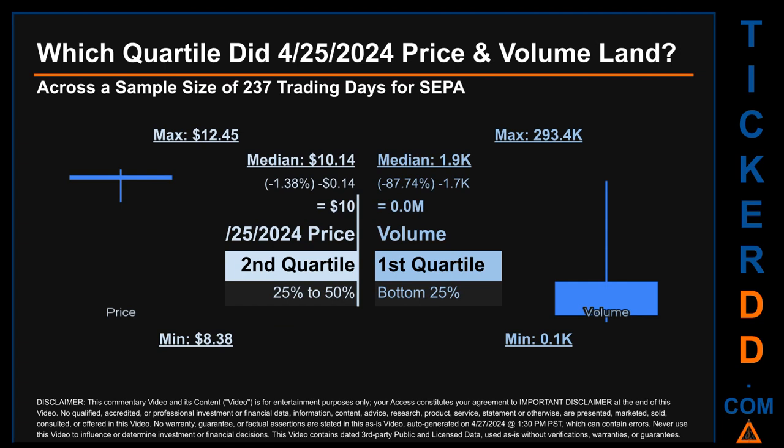Hello, my name is Maria. Which quartile did April 25, 2024 price and volume land in across a sample size of 237 trading days? The maximum end-of-day price for SEPA was $12.45 while the minimum was $8.38. Within that range, April 25, 2024's price of $10 landed within the second quartile, putting it within the 25 to 50% range of all sampled end-of-day prices. The day's volume landed within the first quartile, at the bottom 25% of all sampled daily volume, which saw a max of 293,400 and a minimum of 100. SEPA has a median price of $10.14, so April 25, 2024's price was lower than that middle marker by 1.38%. The day's volume of zero million was less than the median by 87.74%.